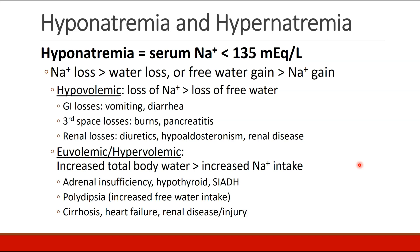Hypovolemic hyponatremia is when the loss of sodium exceeds the loss of free water. This can occur if there are GI losses due to vomiting or diarrhea, third space losses as we see in burns or pancreatitis, or renal losses, which can occur with diuretics, hypoaldosteronism, or renal disease.